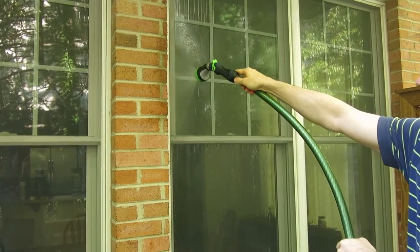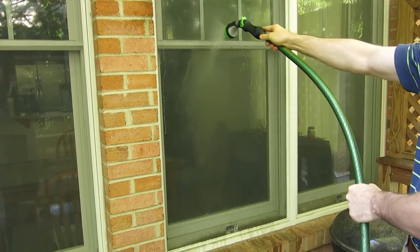It's possible to remove the screens to clean them, but I found it's easier to use a hose or pressure washer to clean them in place. You don't need too much power and you'll want to do this right before cleaning the window itself.